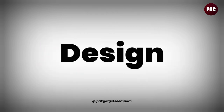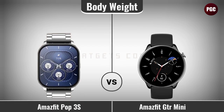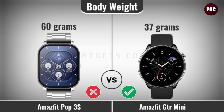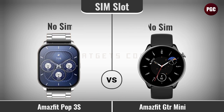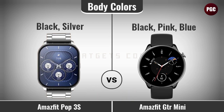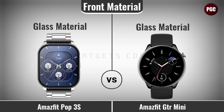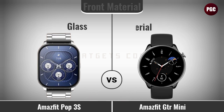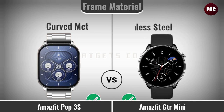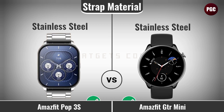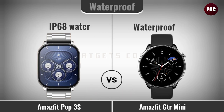Now for design comparison: body weight, body dimensions, SIM slot, body colors, front material, frame material, strip material, and waterproof.